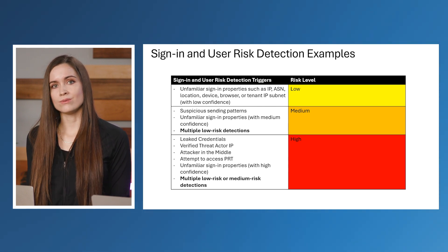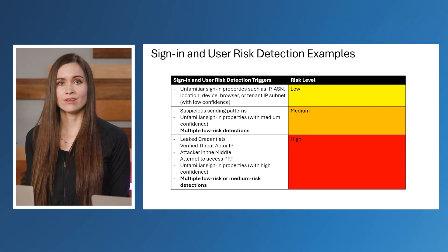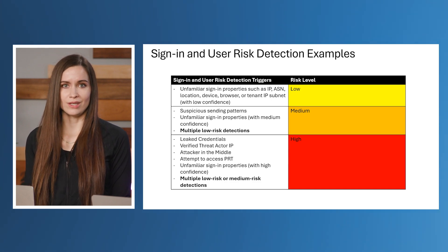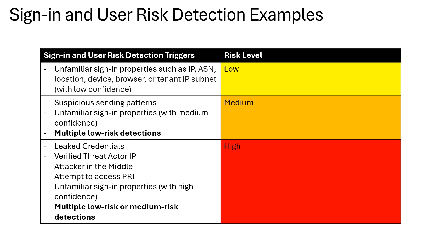For both sign-in and user risk detections, a low risk level signifies that there are anomalies present in the sign-in or the credential, but we're less confident that these anomalies mean that the account is compromised. These anomalies may include unfamiliar sign-in properties such as IP, location, device, browser, or tenant IP subnet. Medium risk often includes a suspicious sending pattern or a combination of low-risk detections, such as more than one unfamiliar sign-in properties.